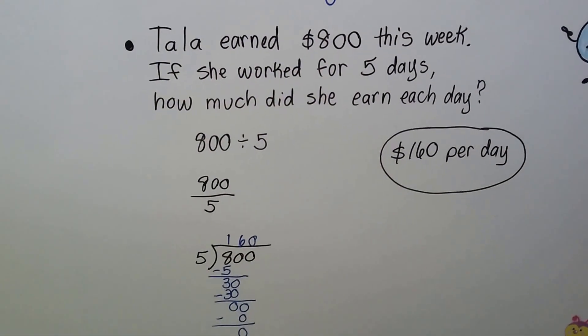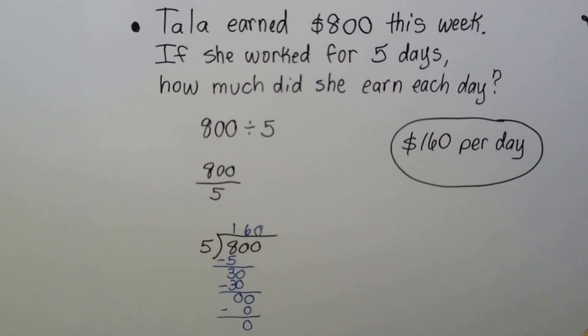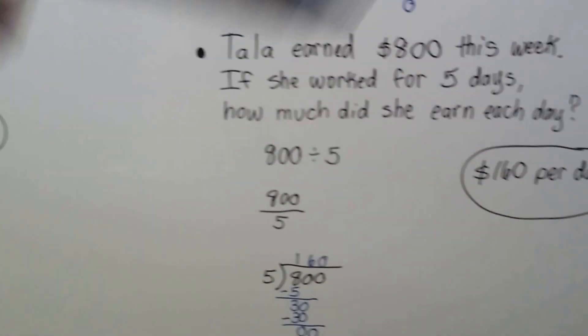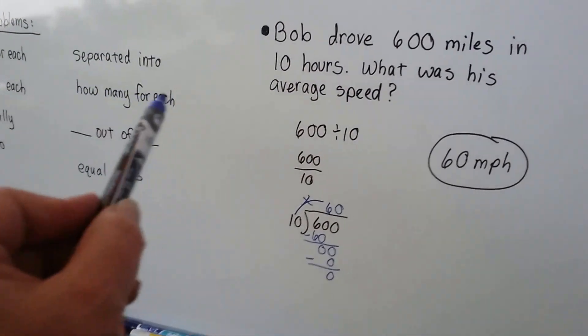Here's one last one. Tala earned $800 this week. Now if she worked for 5 days, how much did she earn each day? So that was another one of our clues, wasn't it? The word each. Okay, how many each?